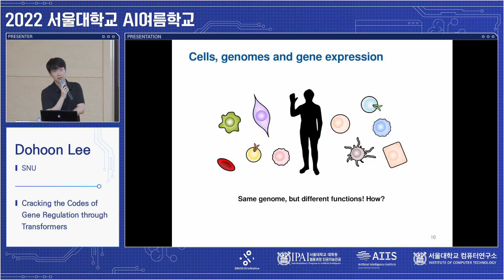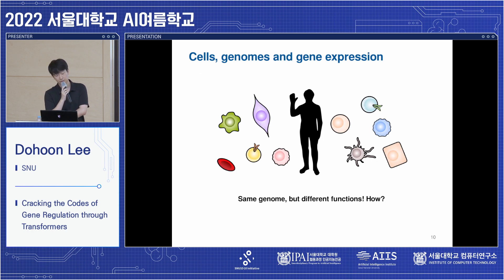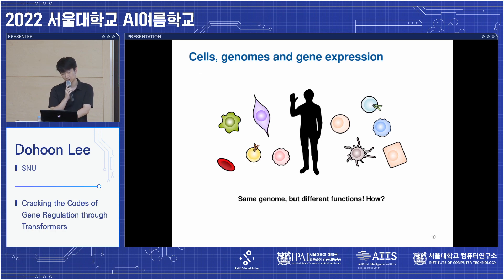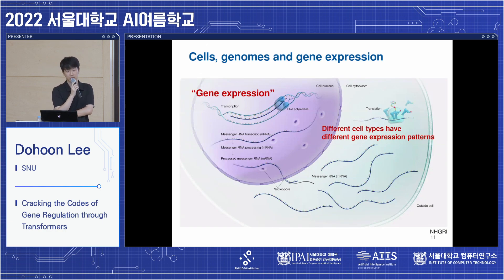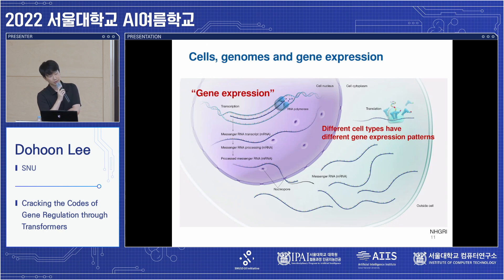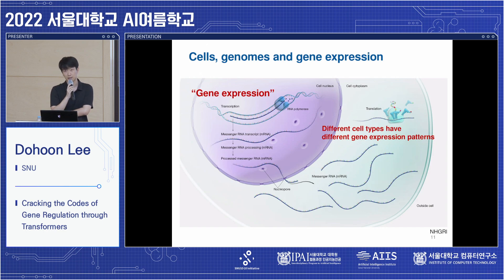Interestingly, many of the cells in our body share identical genomes, but how can cells look so different and have different functions? It is because different cell types only use a different subset of genomic information. The utilization of genomic information is called gene expression, and therefore different cell types have different gene expression patterns.